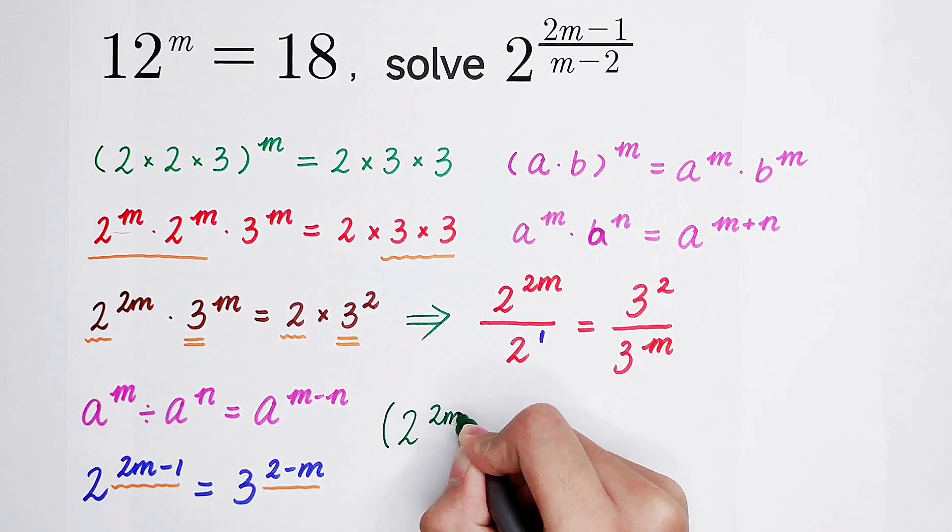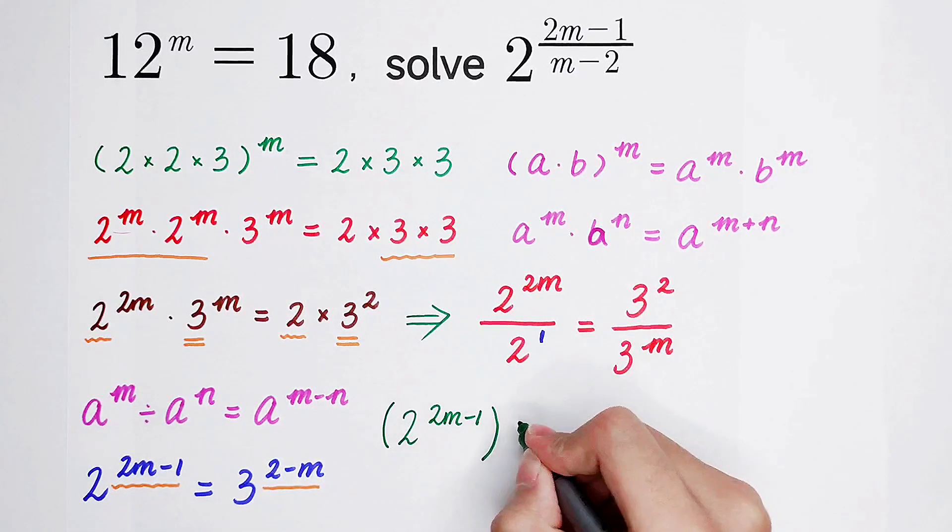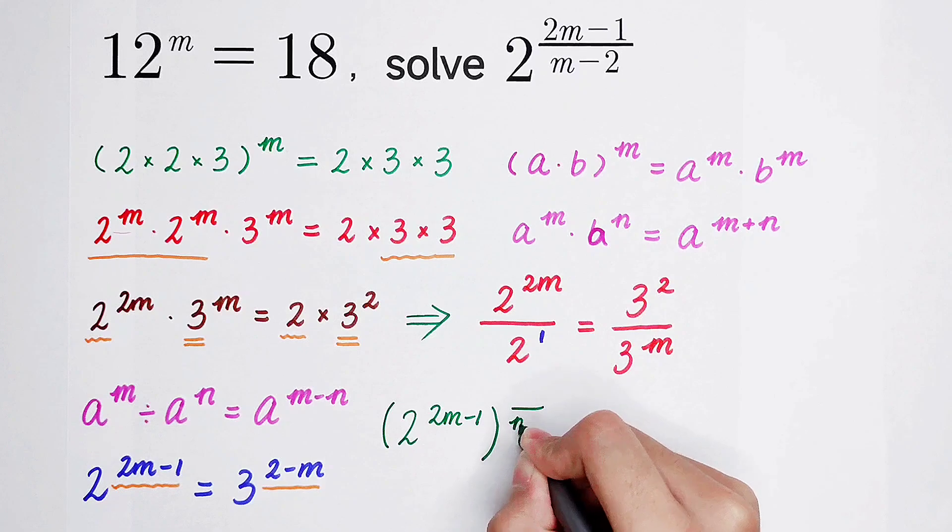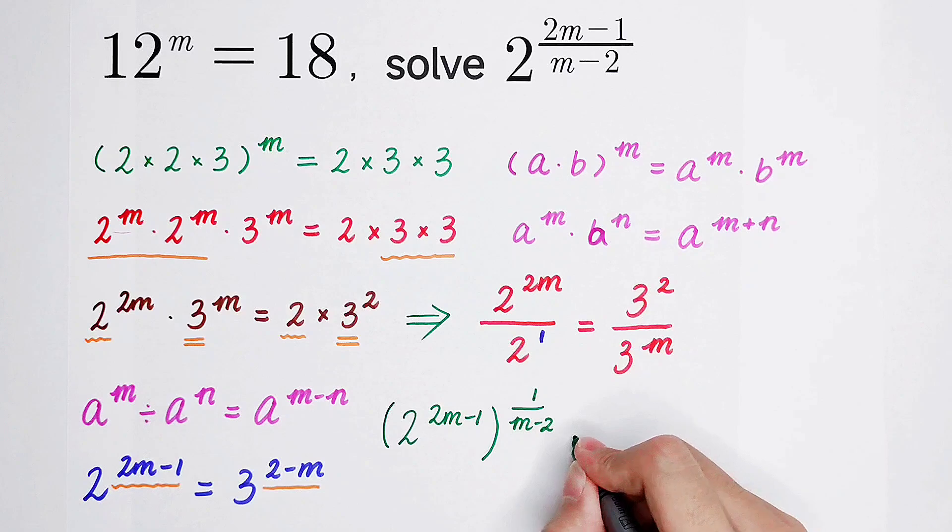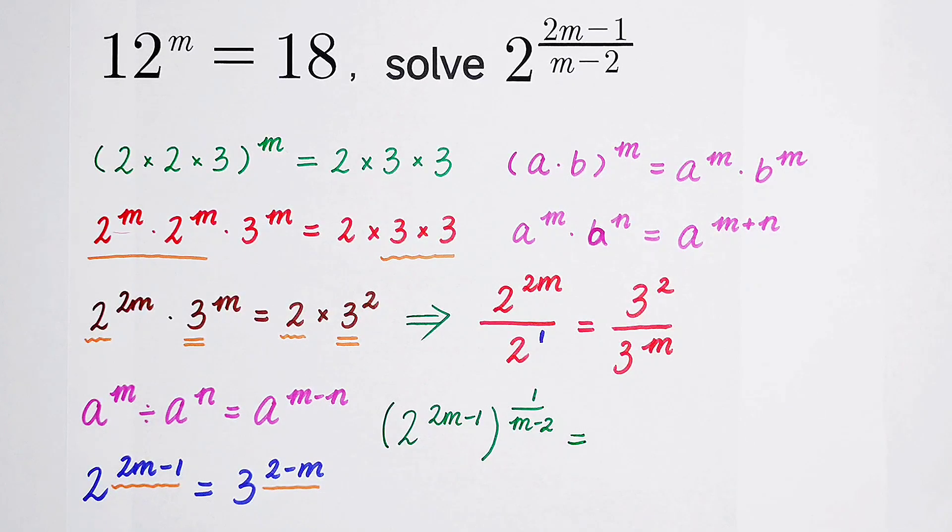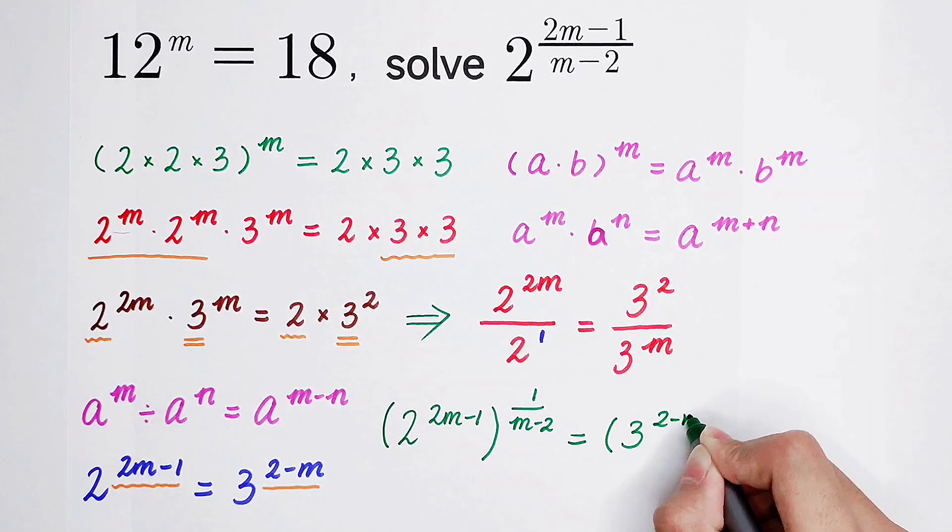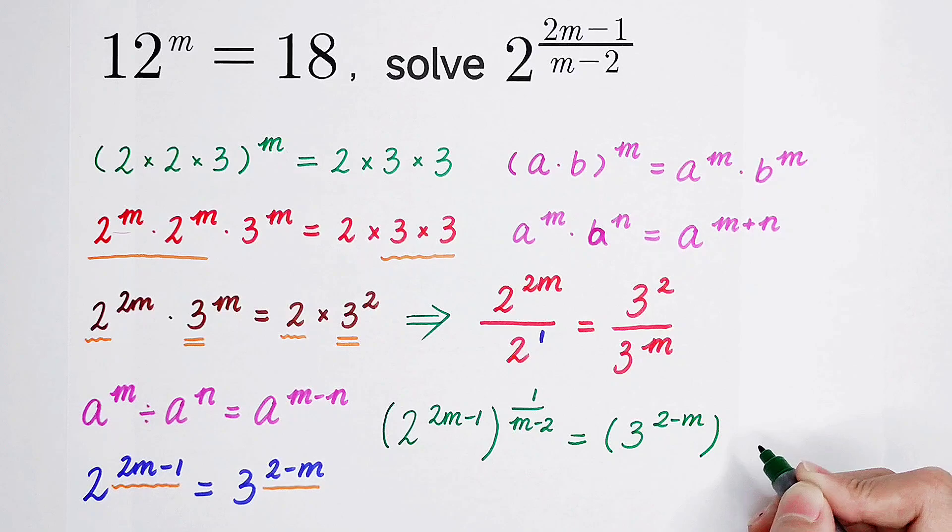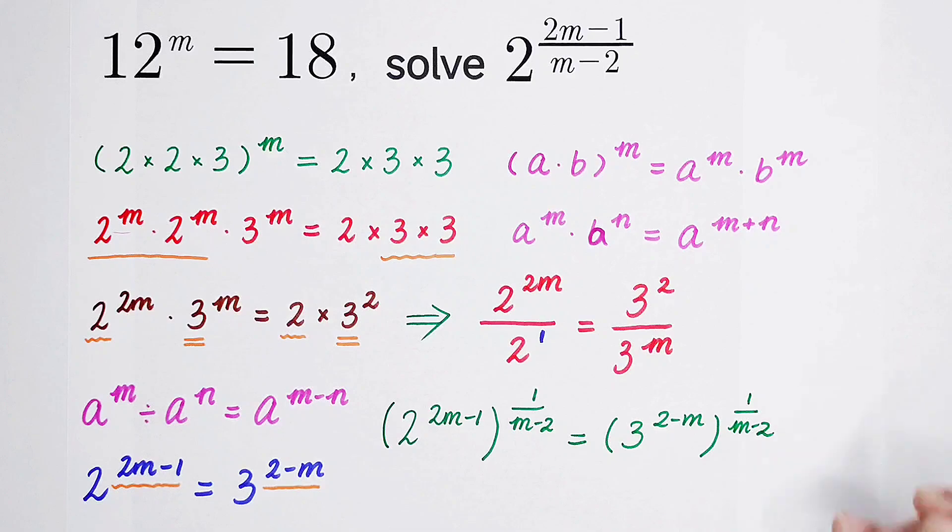I can get a power that m minus 2, 1 over m minus 2. So I can get this power. Then it is equal to what's on the right-hand side. It's 3 to the power 2 minus m and then to the power 1 over m minus 2.